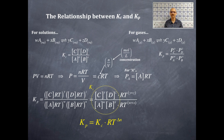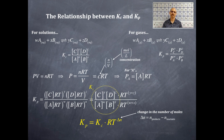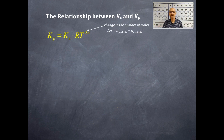So the relationship between Kc and Kp is: KP = KC × RT to the power of ΔN, where ΔN is the change in the number of moles — just like any change, it's final minus initial — so ΔN equals moles of products minus moles of reactants. Know this equation.